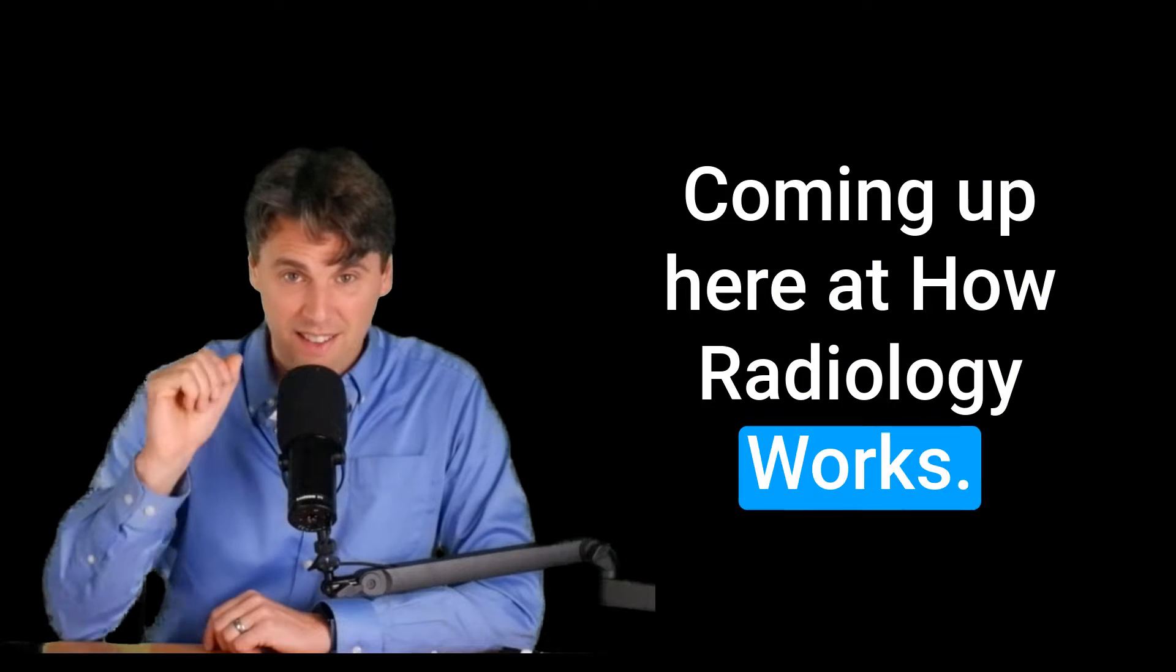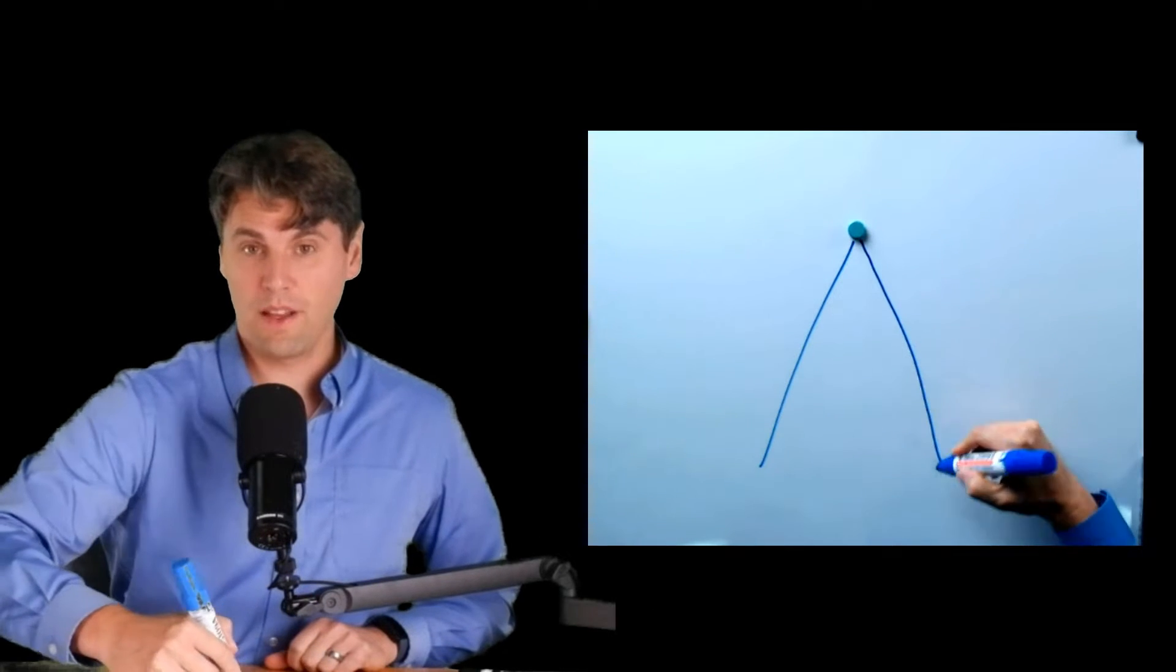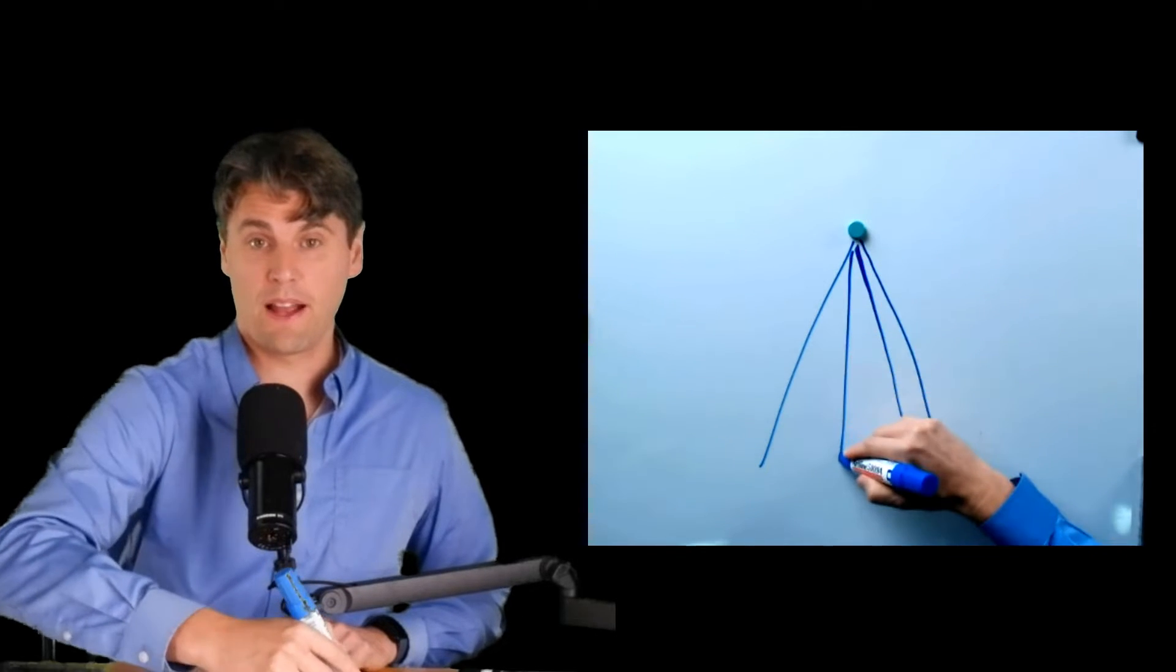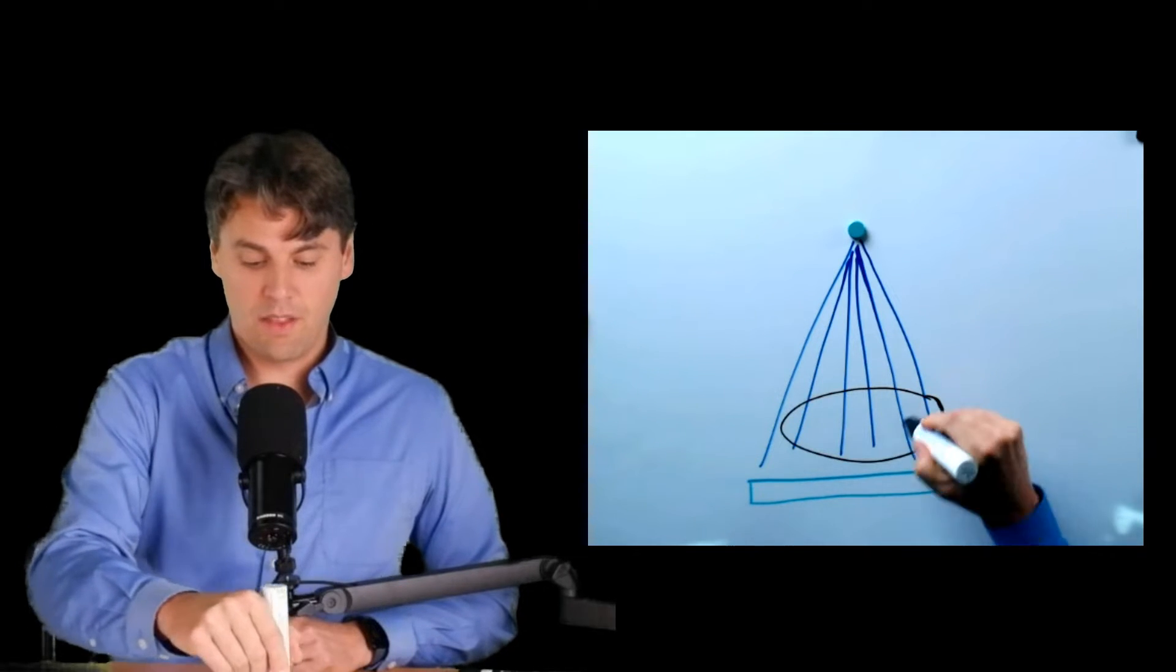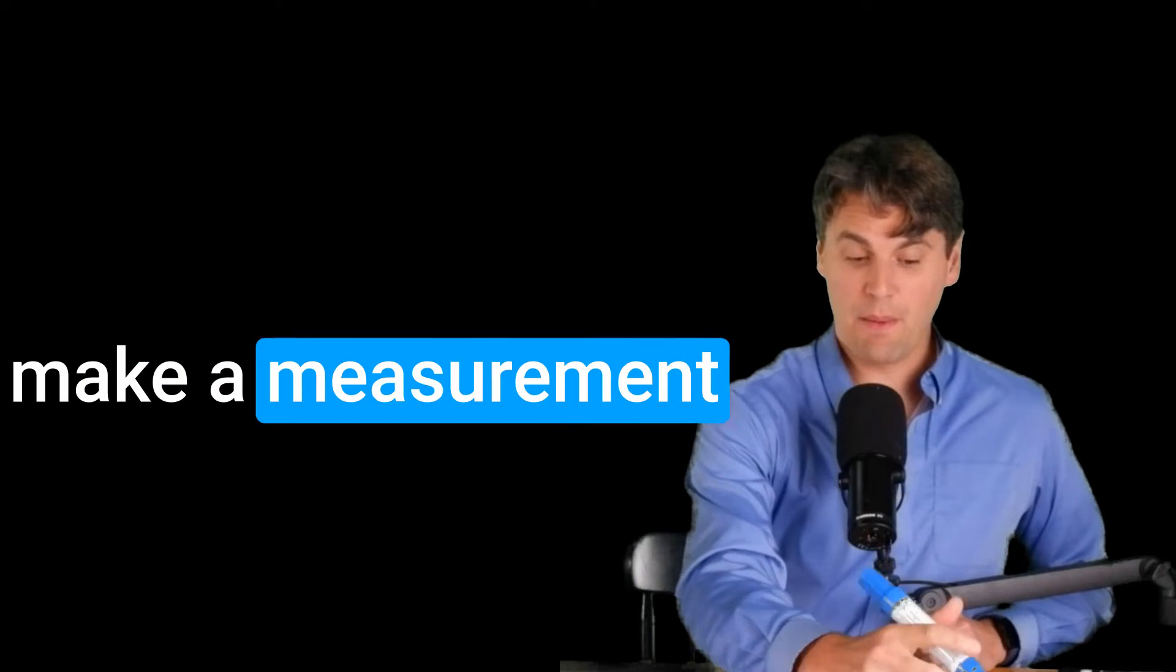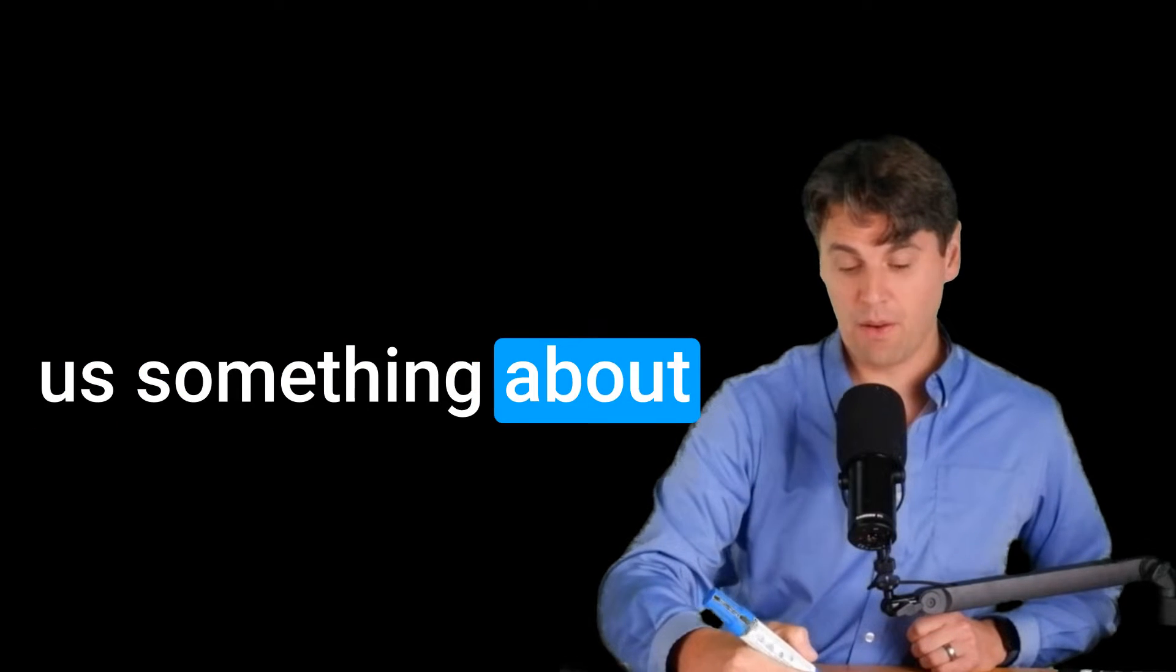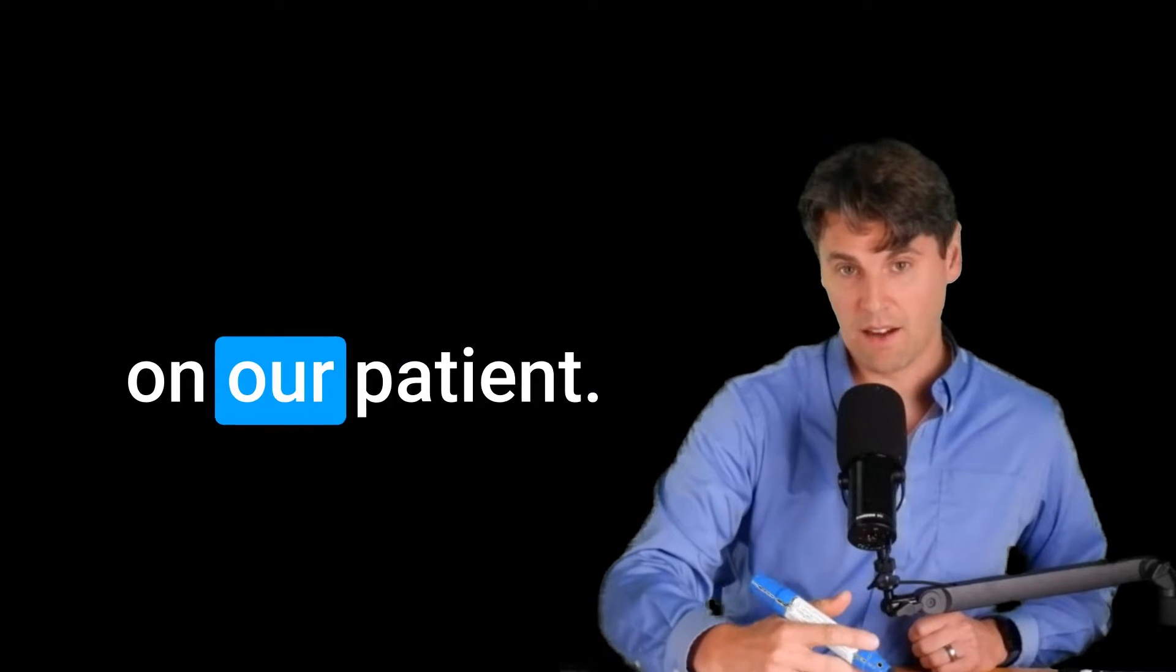Coming up here at Power Radiology Works, I'm going to draw a 2D view of our x-rays coming down. So these are x-rays coming down from our x-ray tube. Our image receptor is down here, and our patient is right here in the middle, lying on the table. And what we would like to do is have a way that we could make a measurement close to our x-ray tube, and it could tell us something about the radiation which is actually incident on our patient.